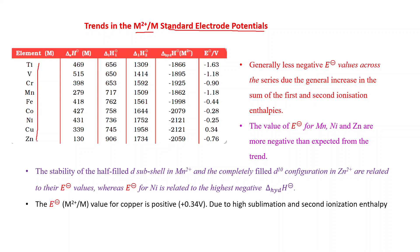For the 3D transition series, these are the values given. Enthalpy of sublimation or enthalpy of atomization — these are the same in this case. The first and second ionization enthalpies are listed, along with hydration enthalpy and the standard electrode potential values.